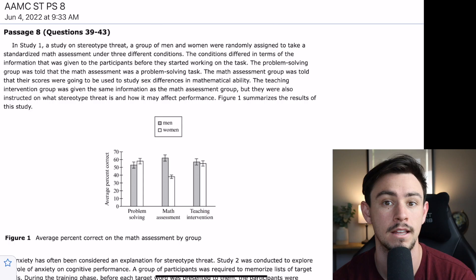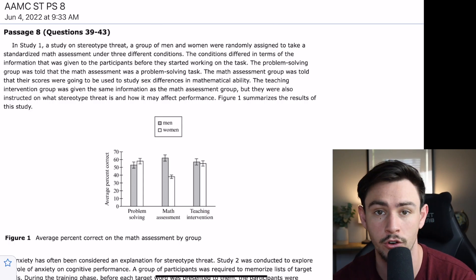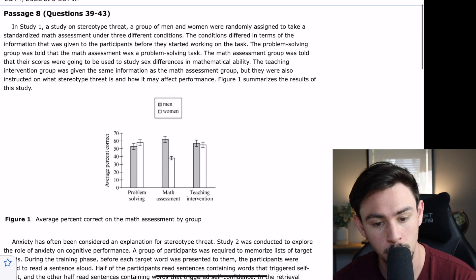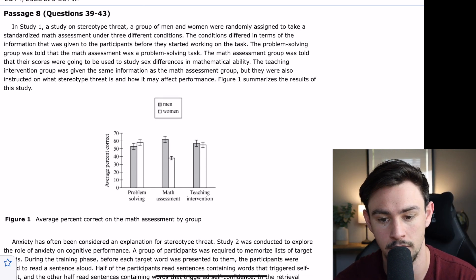Today, I'm going to walk you through the AAMC sample test psych-soc passage number eight. Let's go ahead and take a look at it. Like always, I'm going to read the passage, flowchart it out, and show you how to get all the answers correct. So, jumping right in, this passage says, In study 1, a study on stereotype threat.